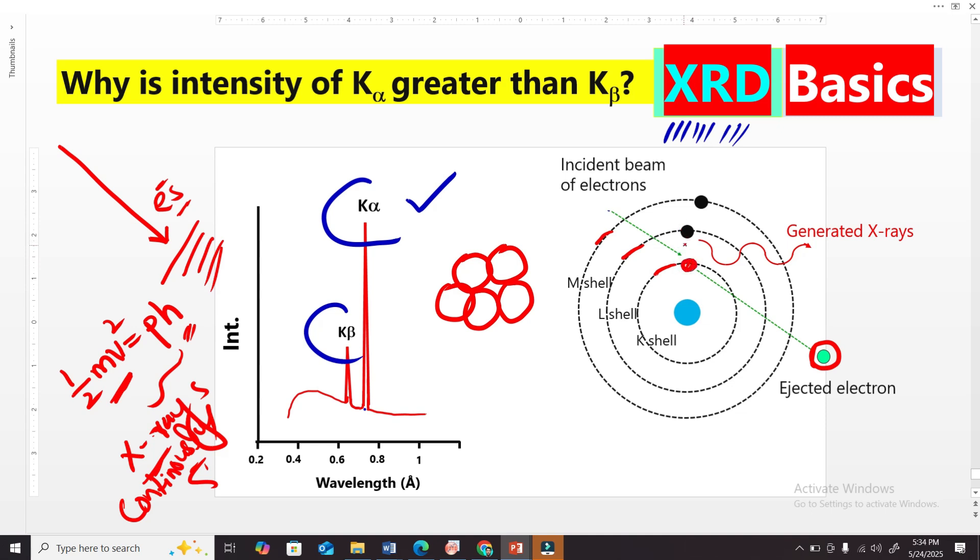So the L-shell electron can drop to this vacancy. And because of this transition, the electron in the L-shell is at higher energy compared to the K-shell.